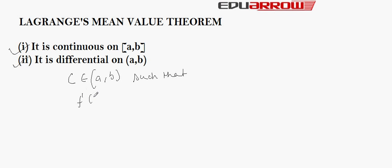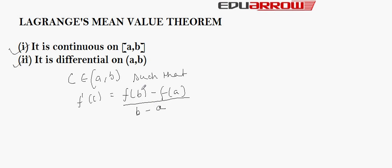F'(C) is equal to F(B) minus F(A) divided by B minus A. This means the differential of the given function at C is equal to the value of the function at B minus the value of the function at A, divided by B minus A.